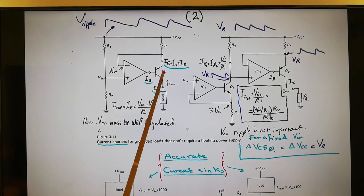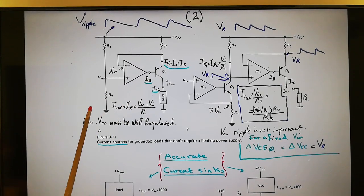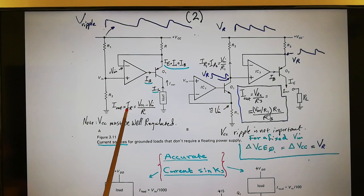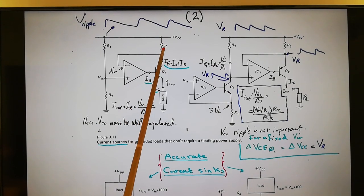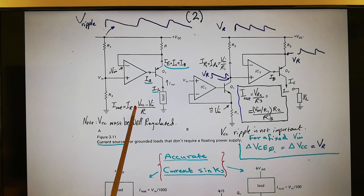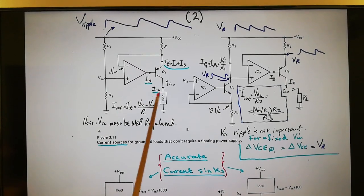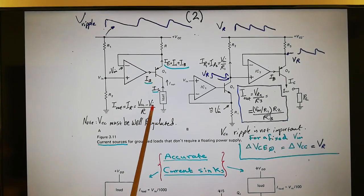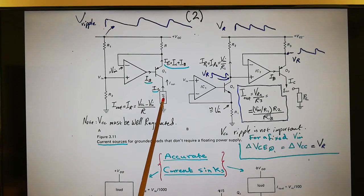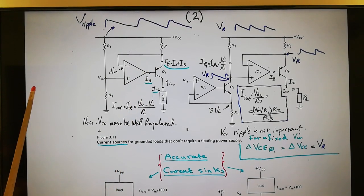I_out equals IR, which is (VCC minus VN) over R — where VN is the voltage across R1. That sets I_out, but don't forget we will be missing IB.